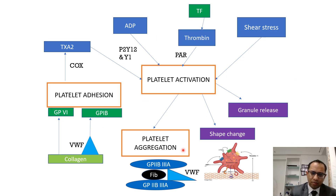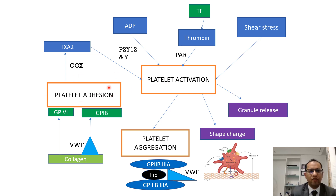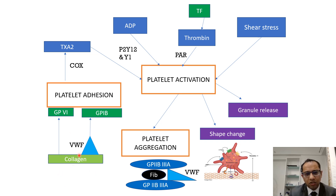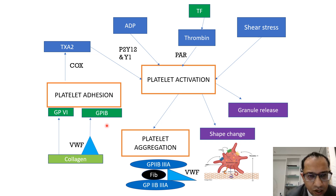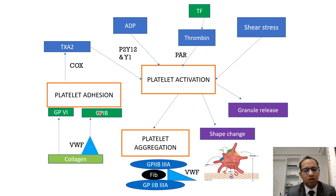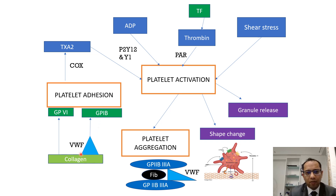Primary hemostasis can be explained with three main factors. The first is platelet adhesion. Whenever a primary hemostatic plug is to be formed, platelet adhesion happens first when subendothelial collagen is exposed due to injury. Von Willebrand factor combines with the platelet through a receptor called glycoprotein 1b. Deficiency or mutation in glycoprotein 1b causes Bernard-Soulier syndrome. Platelets can also combine directly to collagen through glycoprotein 6, but the stronger effect is through the glycoprotein 1b–von Willebrand factor interaction.